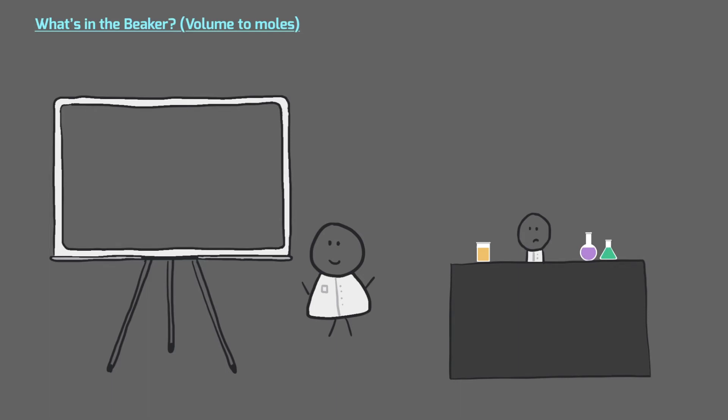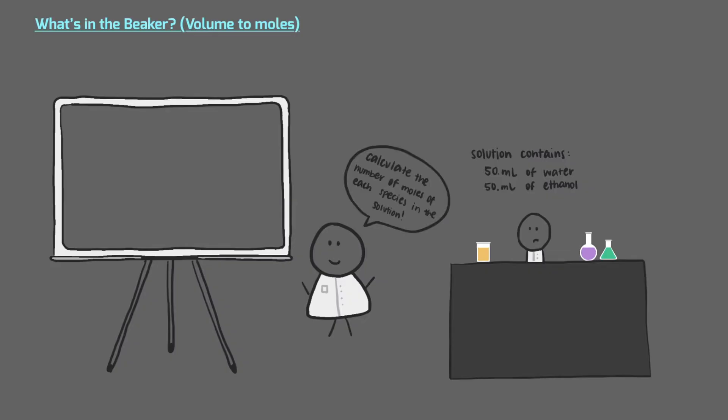Imagine yourself in your chemistry lab mixing together solutions. You make a solution by mixing together 50 milliliters of water and 50 milliliters of ethanol, and your lab instructor tells you that you need to calculate the number of moles of each species in your solution. She writes only two numbers on the board to help you — the density of water and the density of ethanol — but you don't really know what to do with that information. Don't worry, we'll walk through how to approach this type of problem in this video.